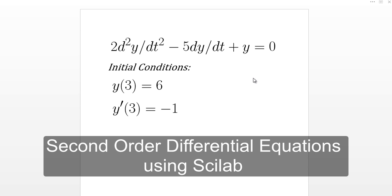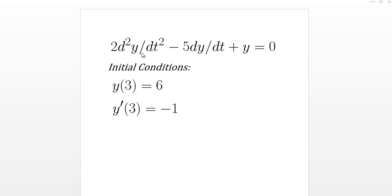Hey guys, how's it going? In today's video we'll learn how to solve a second order differential equation using Scilab. As you can see on your screen, the equation is 2·d²y/dt² minus 5·dy/dt plus y equals 0, where y is a function of t, with initial conditions y(3)=6 and y'(3)=-1. Here y prime denotes the first derivative of y with respect to t.